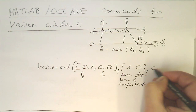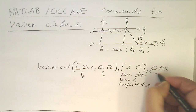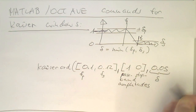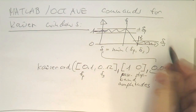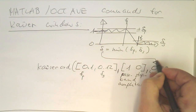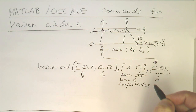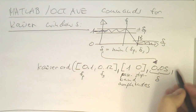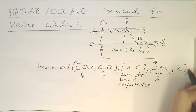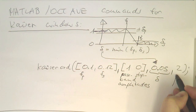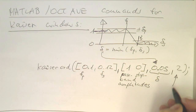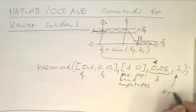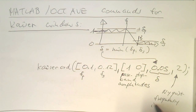The next argument is our delta — for example, 0.05. That's the most important part of the Kaiser design: we can define this permitted ripple delta. The last argument is usually 2, which sets the Nyquist frequency convention to match other filter design commands, meaning normalized frequencies are multiplied by 2.